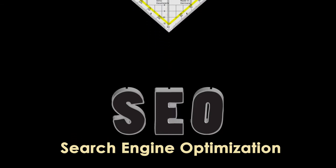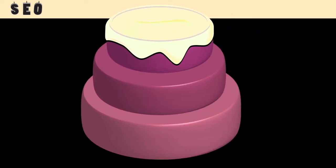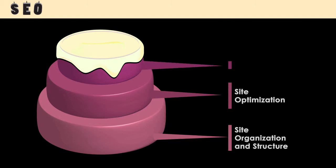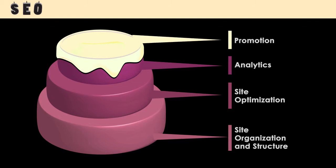If you think of SEO as a three-layer cake, the layers would be site organization and structure, then site optimization, then analytics. And finally, the finishing touch, or the frosting, would be promotion, which includes social media, blogging, and paid ads.